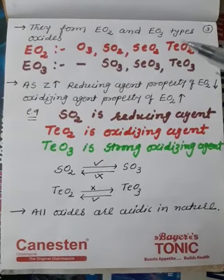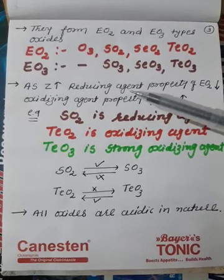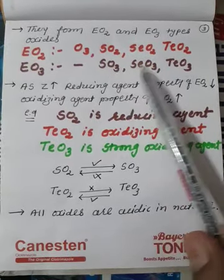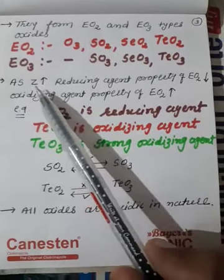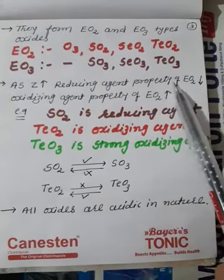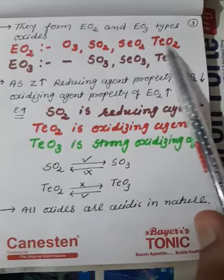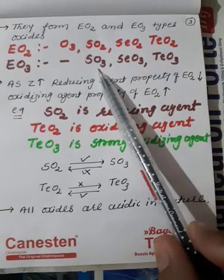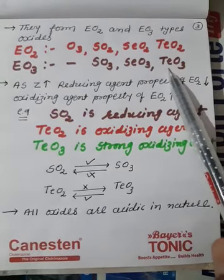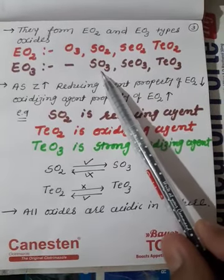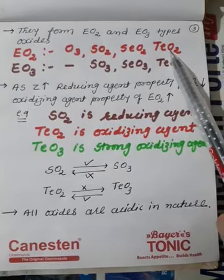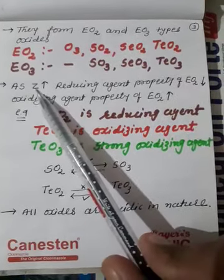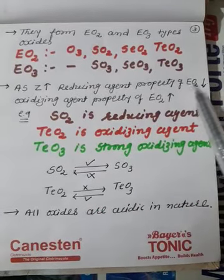To discuss periodicity of oxides, the oxidation states table is very useful — which oxidation state is more stable down the group. As atomic number increases, the reducing agent property of EO2 decreases. SO2 can easily convert to SO3, but TeO2 cannot easily convert to TeO3. SO2 easily undergoes oxidation, so it is a strong reducing agent; TeO2 oxidation is very difficult, so it is a weak reducing agent.